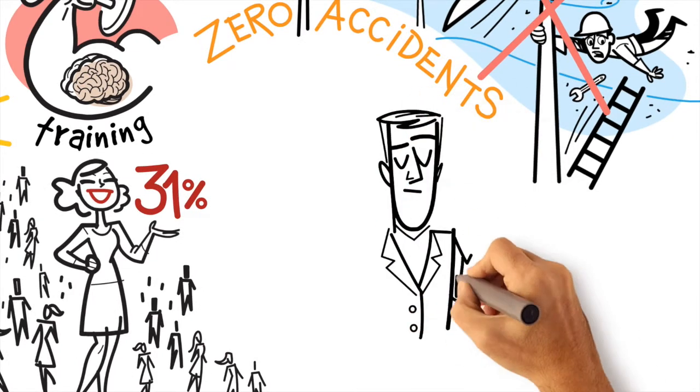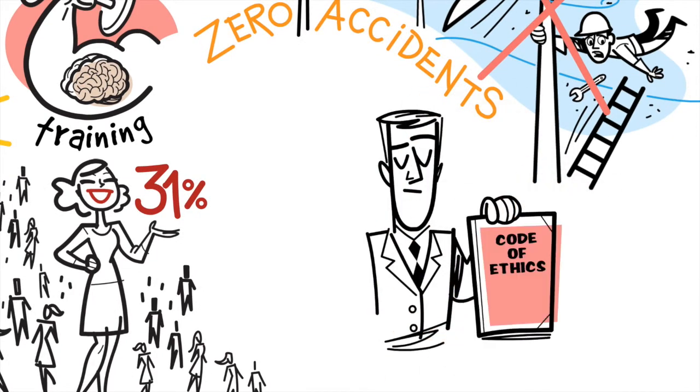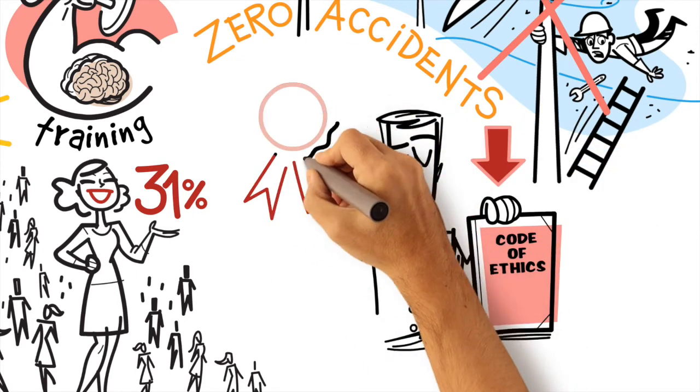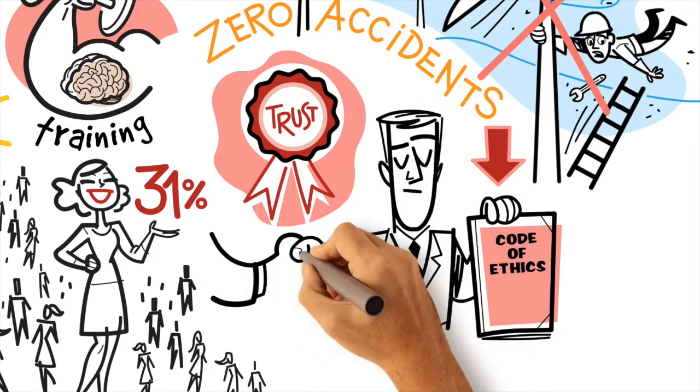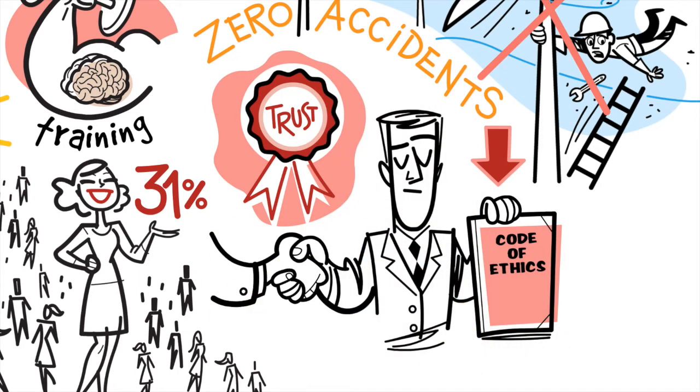We are committed to this policy through our code of ethics. But why does EDPR need a code of ethics? Because our success is based on the relationship of trust built with all stakeholders. Have it in mind when interacting with all of them.